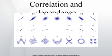Partial Correlation. If a population or data set is characterized by more than two variables, a partial correlation coefficient measures the strength of dependence between a pair of variables that is not accounted for by the way in which they both change in response to variations in a selected subset of the other variables.